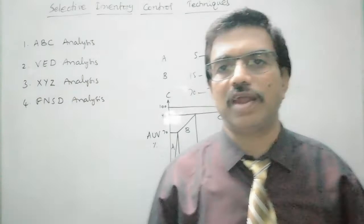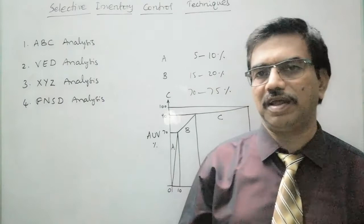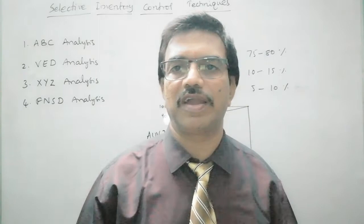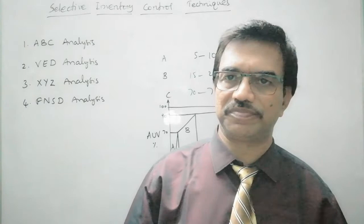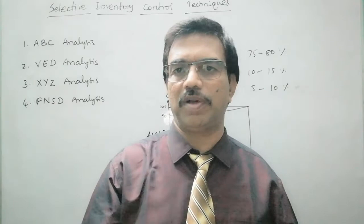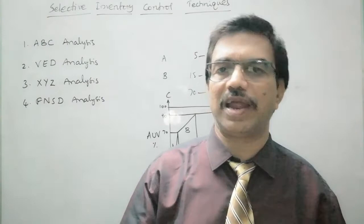This is how ABC classification of inventory items helps in controlling inventory. Coming to VED analysis, the criteria for division of inventory items into Vital, Essential and Desirable is the importance or criticality of the item. We will class those items as Vital which, when not available in the store, cause the entire production system to be stopped.